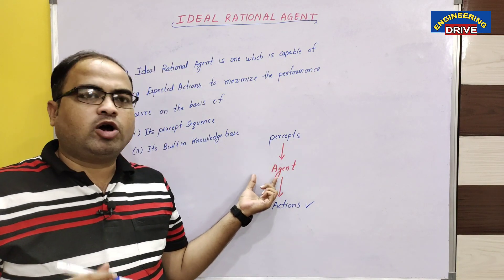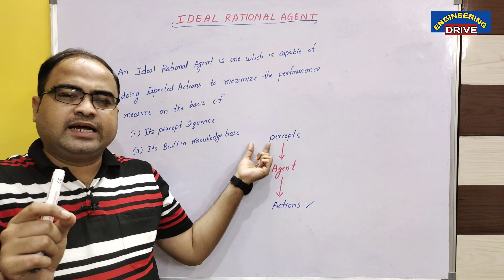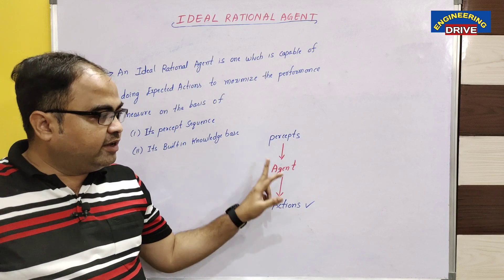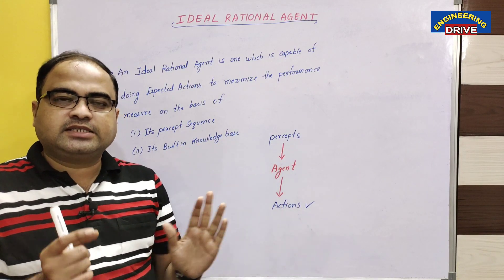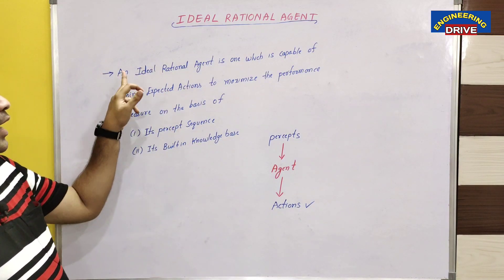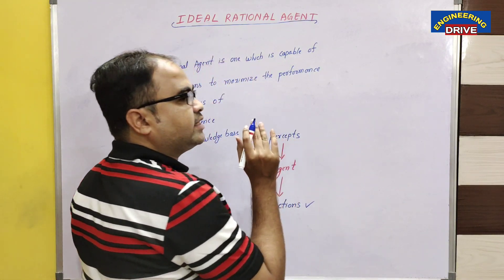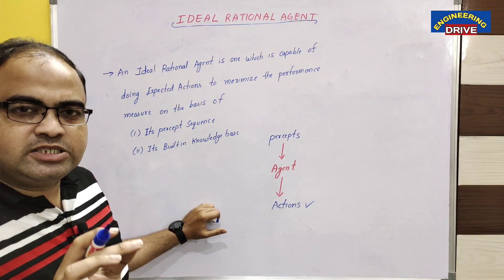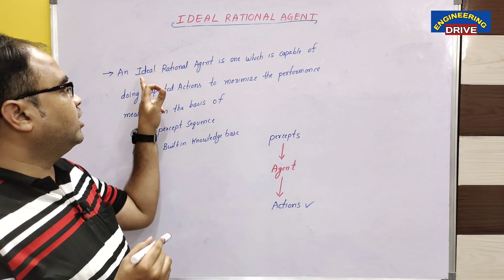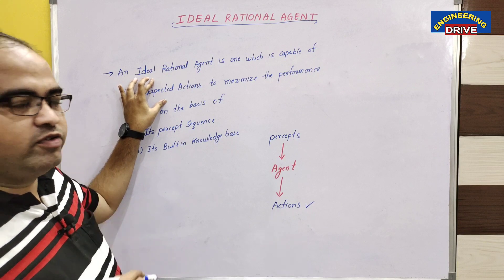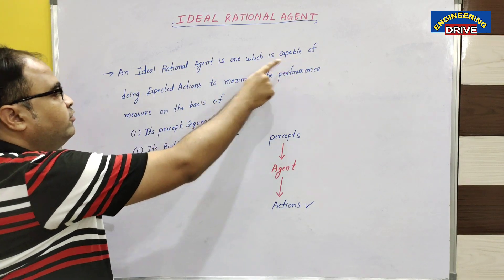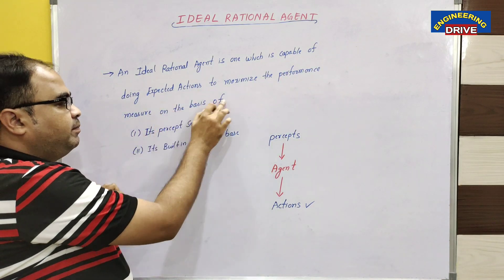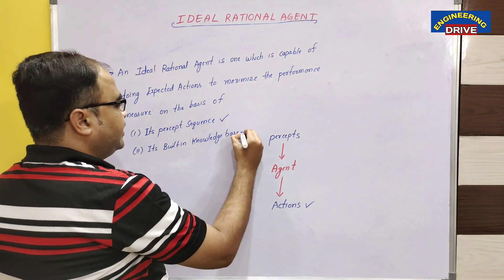Now, an agent may not always produce the required actions based on percepts. At that time we say the agent is unsuccessful. When we say the agent is successful is if the agent does the right actions for the right percepts. An ideal rational agent means the agent which always does the correct action and will not generate the wrong action. If the agent is generating only the right action, then we can say that particular agent is an ideal rational agent. Focusing on the definition: an ideal rational agent is capable of doing expected actions — right actions — to maximize the performance measure on the basis of two things: percept sequence and built-in knowledge base.